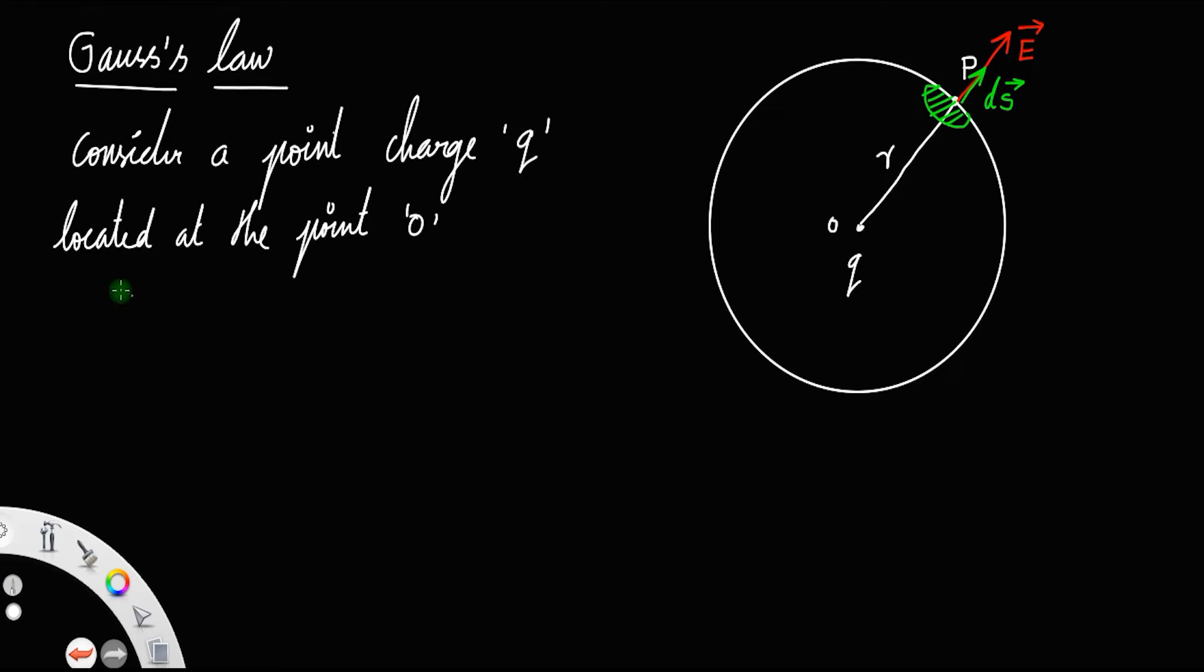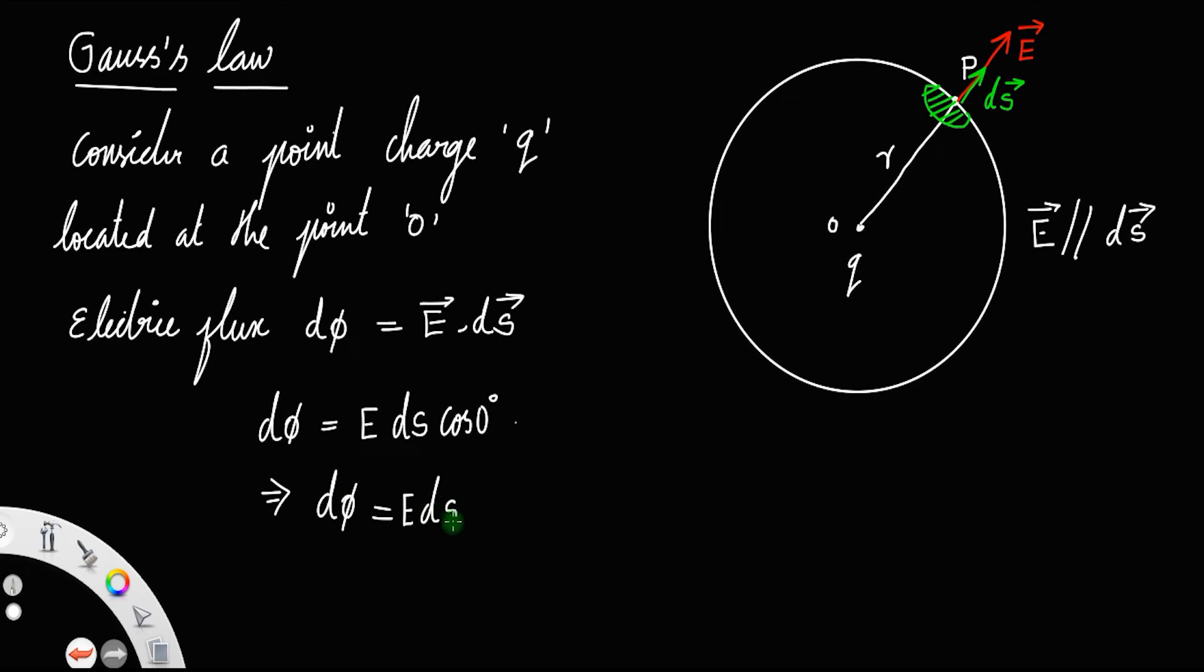We have by definition electric flux through this small area ds, let us call that as dφ, will be the dot product of electric field and area. But the angle between E and ds is zero since E is parallel to ds, which means angle θ is 0. Therefore, dφ will be E ds cos 0 degree, which implies dφ equals E ds. Let us call that equation number 1.